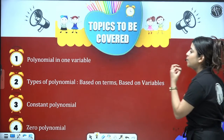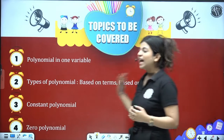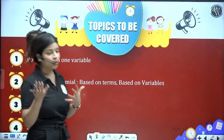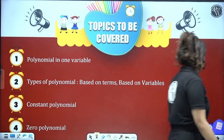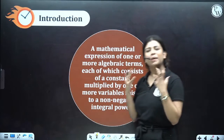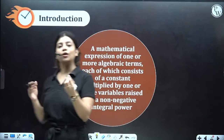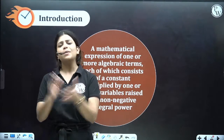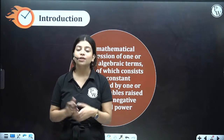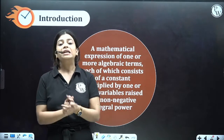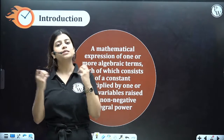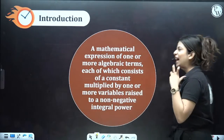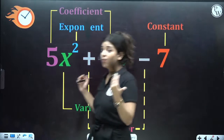We are going to learn about polynomial in one variable, types of polynomials, constant polynomial, zero polynomial, and other things from class 9. So, what is basically the definition of polynomial? A polynomial is nothing but an algebraic expression comprised of variables, coefficients, constants, operators, and variables raised to a certain power — known as the exponential power. All these things collectively form what we call a polynomial.